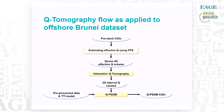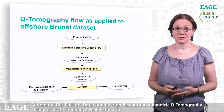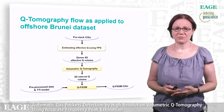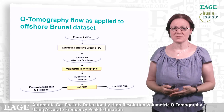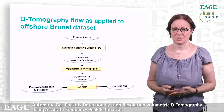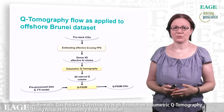After this description of our methodology, I will show the complete flow used on the Brunei data. The starting point is a set of pre-stack CIG gathers without NMO to avoid stretch, converted back to the time domain. We use the frequency peak shift method to obtain a dense effective Q volume in four dimensions: time, cross-line, inline, and offset. We really compute Q for each sample.